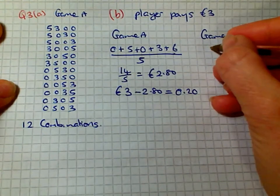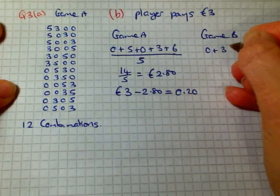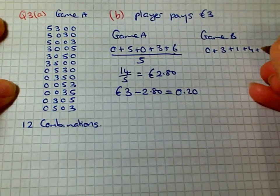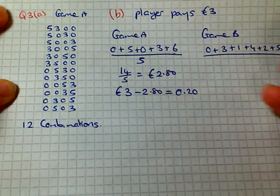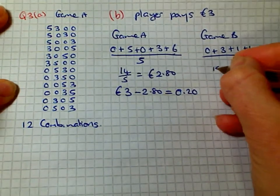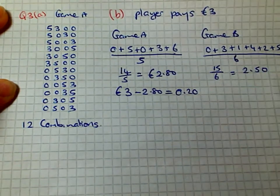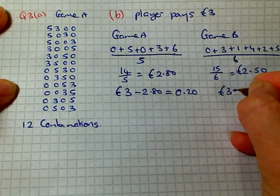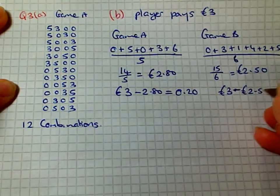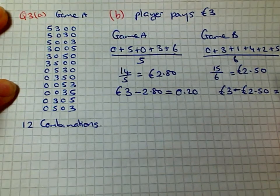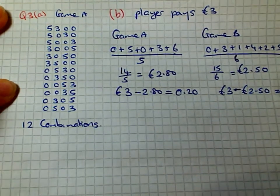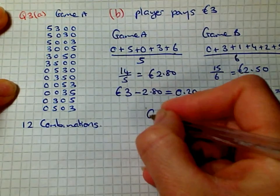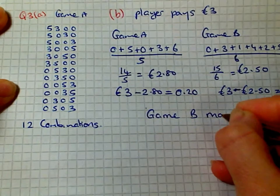From game B, it's 0 plus 3 plus 1 plus 4 plus 2 plus 5 divided by 6, which is 15 divided by 6, which is 2 euros and 50 cents. 3 euros to play the game minus 2 euros and 50 cents, the charity would make an average of 50 cents. So game B would make more money for the charity.